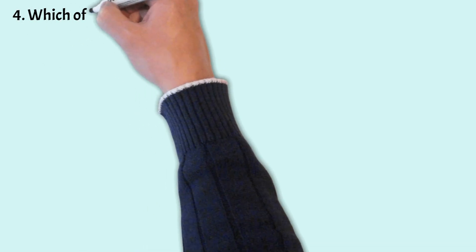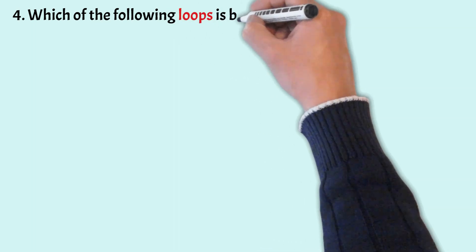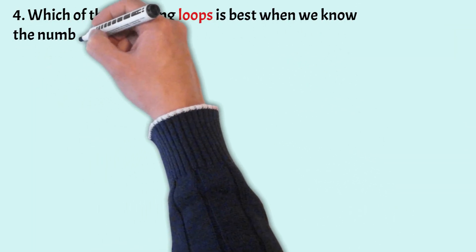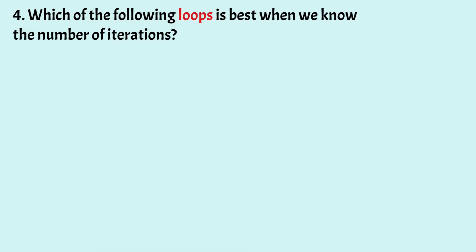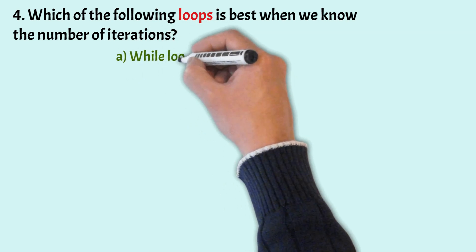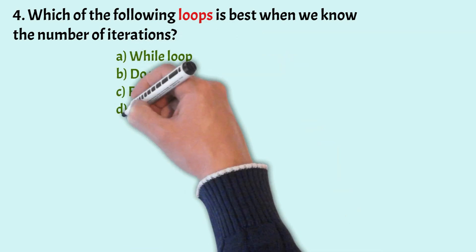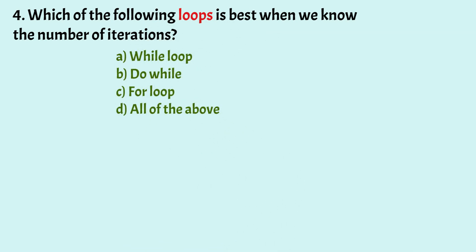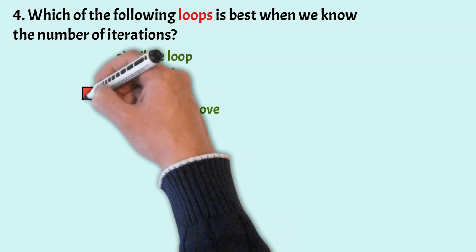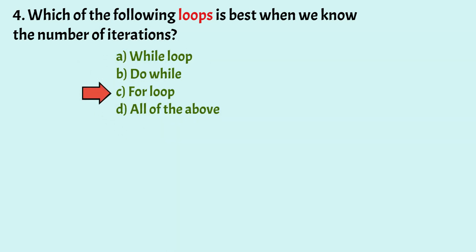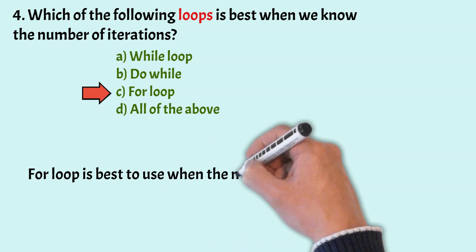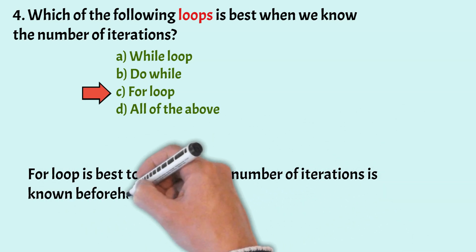Which of the following loops is best when we know the number of iterations? The options are while loop, do while, for loop and all of the above. The correct answer is option C, that is for loop. For loop is best to use when the number of iterations is known beforehand.